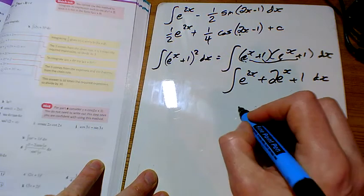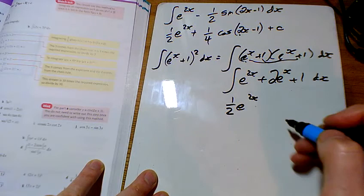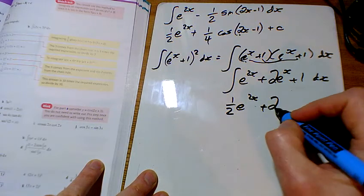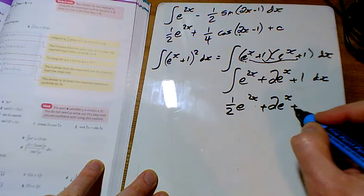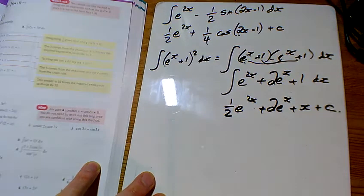And now I can integrate that. So e to the 2x stays as e to the 2x. I've got half of it divided by the number of x's. This one here stays exactly the same. And 1 integrates to give x. So there's that one.